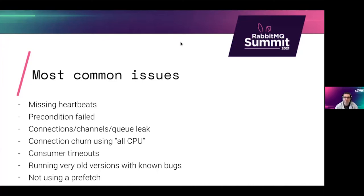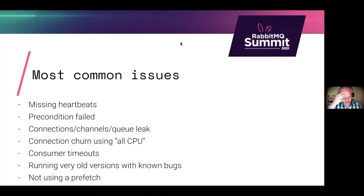Matt Green comments: our developers are struggling to move to quorum queues because they're under time pressure and don't feel the advantage. It's a matter of selling them on it — telling them what they're going to get. The developer says 'it works now, what's the problem?'